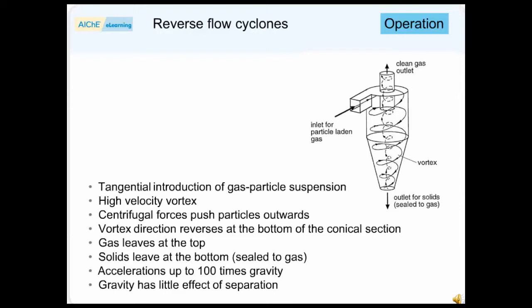The direction of flow of the vortex reverses near the bottom of the conical section, and the gas leaves the cyclone via the outlet at the top.